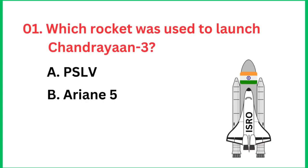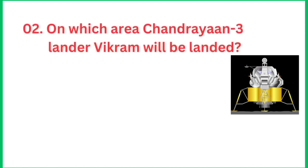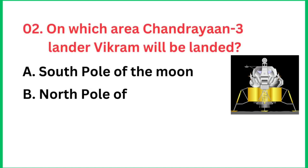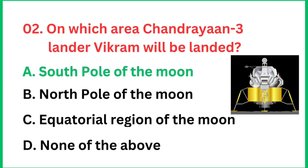Next question: Which rocket was used to launch Chandrayaan 3? The correct answer is LVM3 M4 rocket. On which area will Chandrayaan 3 lander Vikram land? The correct answer is the south pole of the moon.